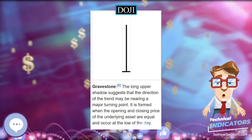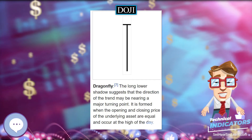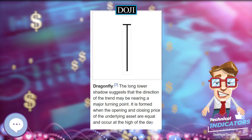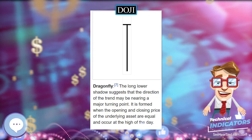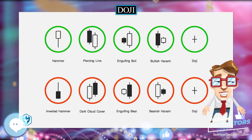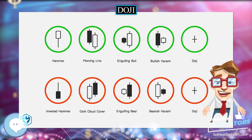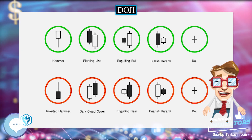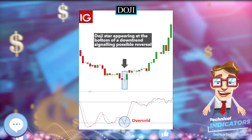Types of Doji: A Doji is a key trend reversal indicator. This is particularly true when there is a high trading volume following an extended move in either direction.